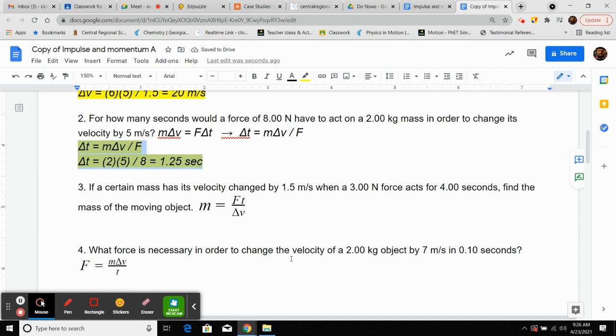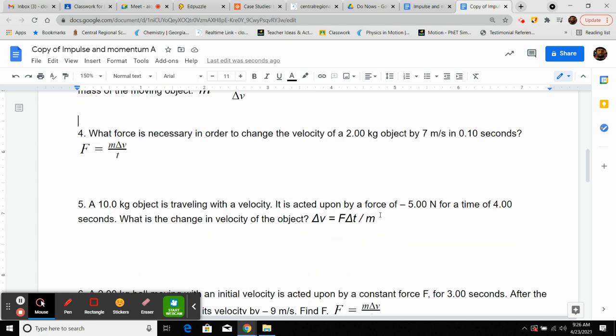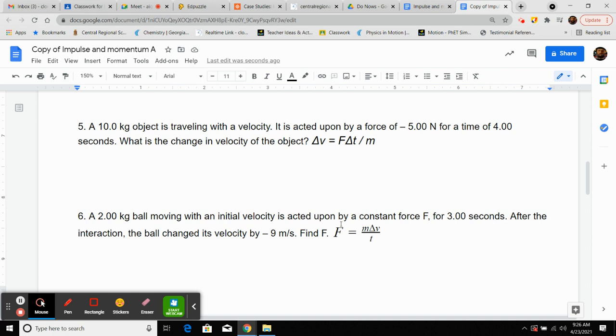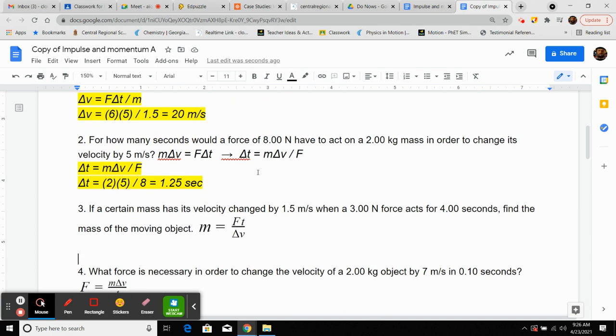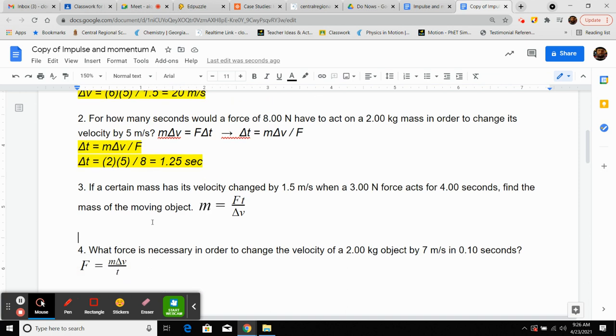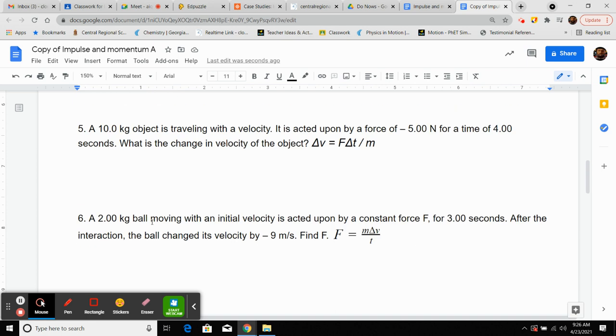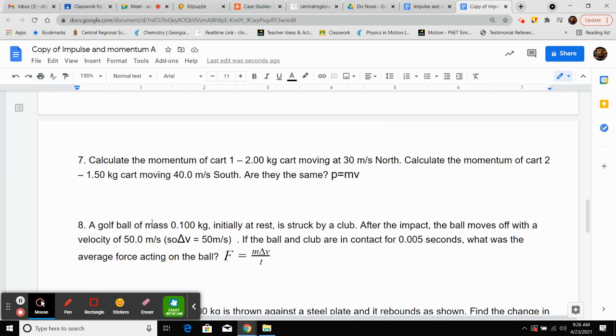Easy, easy, easy. Now 3 and 4, you're given again the equation. You've got to just put everybody in the right spot. Force times time divided by the change in speed or change in velocity. Mass times delta V over time. Same thing over here. Velocity we measure in meters per second. Time in seconds. Mass in kilograms and force in newtons. So then let's scoot, scoot, scoot. Number seven.